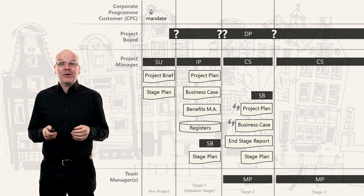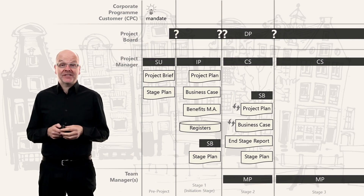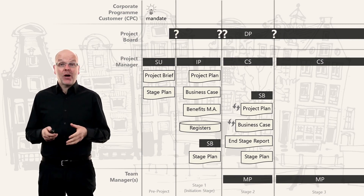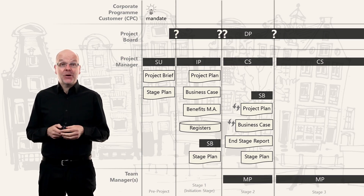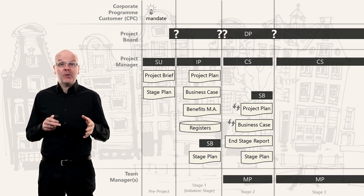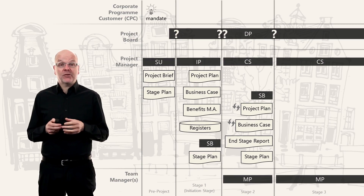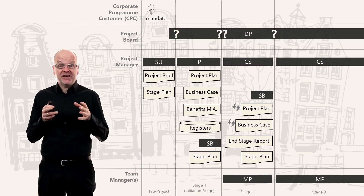So what happens if something goes wrong during a project stage? What do we need to do, or do we just panic? Let's remember where we were in the project overview so far.